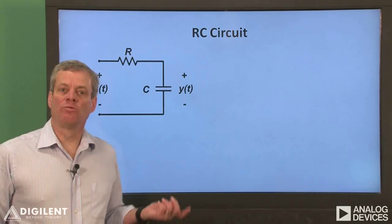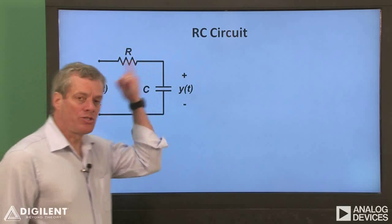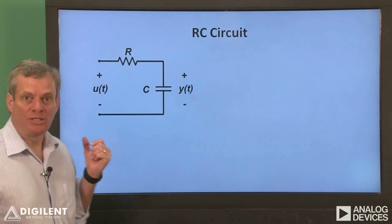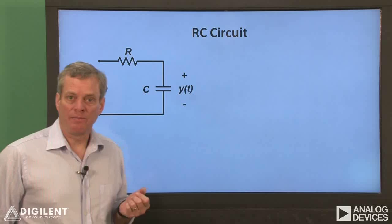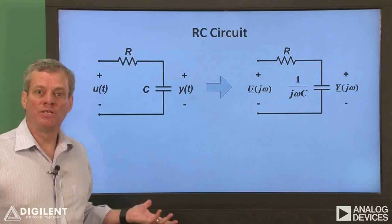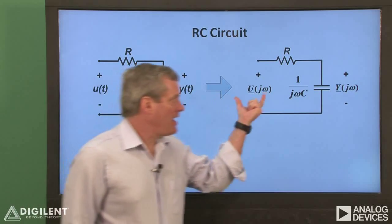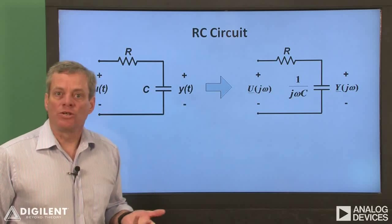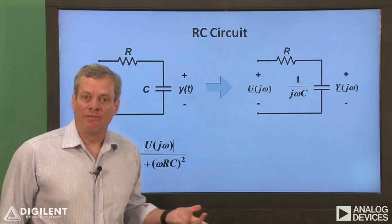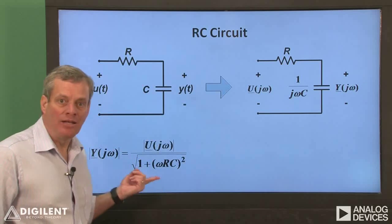As an example, let's take a really superficial look at the magnitude response of an RC circuit. The input is an applied voltage at these terminals, and our output is the voltage across the capacitor. If we convert the circuit to the frequency domain, we can represent the circuit elements by their impedances and the voltages by their phasors. This circuit then becomes a simple voltage divider. If we apply our voltage divider formula and look only at the relationship between the input and output magnitudes, we get the magnitude response shown here.